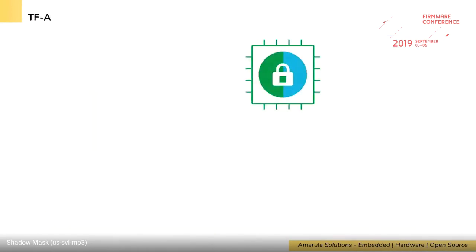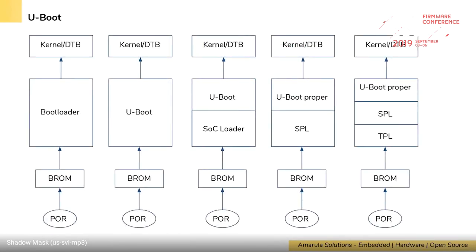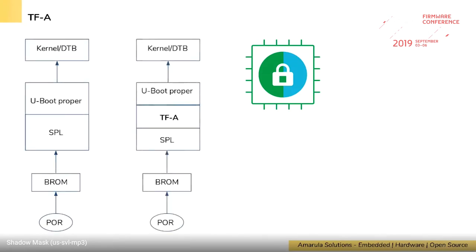That is how the critical boot stages work with respect to SRAM and DDR. For ARM64 or 64-bit servers, there's a tertiary firmware stage: TF-A (Trusted Firmware-A). The bootROM picks up SPL, SPL launches TF-A, and TF-A in turn launches U-Boot proper. When there's a third stage, U-Boot becomes 'U-Boot proper' — we can't simply call it U-Boot since we now have SPL and TPL stages before it.